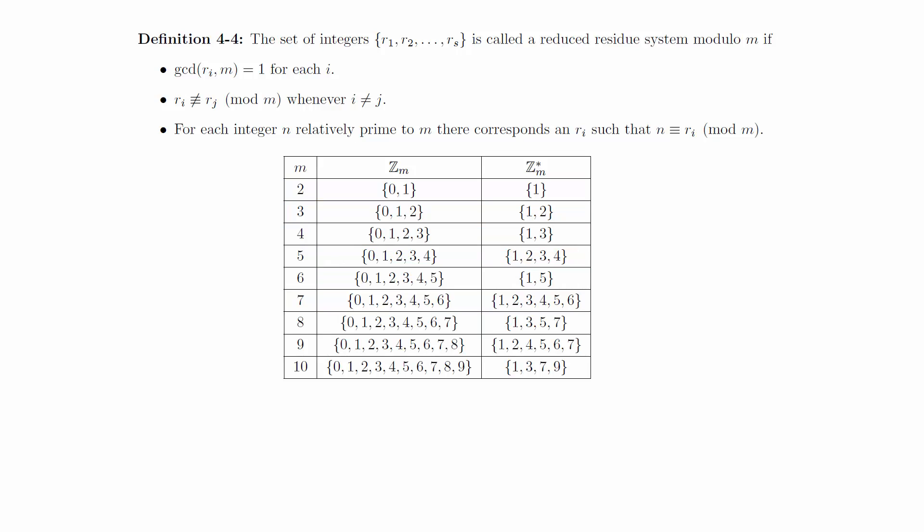We will close this video with one more definition and a statement of a theorem. Definition. The function phi of m will denote the number of positive integers less than or equal to m that are relatively prime to m. The function phi of m is called the Euler-phi function.